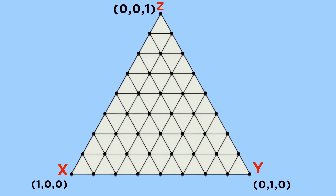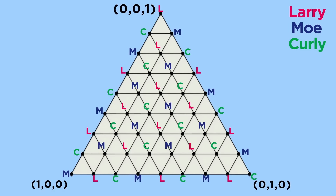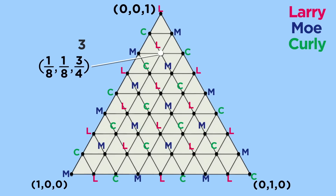Now, label each vertex of the triangle either Larry, Moe, or Curly, so that every little triangle has one of each label. We will apply a second labeling on top of this one, which shows what bedroom each person prefers. Let's look at a single vertex — it corresponds to the rent division (1/8, 1/8, 3/4). We just labeled it Larry, so we ask Larry: if the rent were divided this way, which room would you prefer? Maybe Larry thinks the third room is worth the extra money, so we mark a 3 next to it, indicating he has chosen room 3. Do this for each vertex — ask the person labeled at the vertex which room they prefer at this price division, then mark the answer.